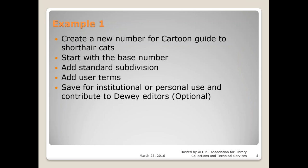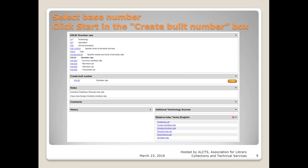Here's the number building assistant example. I have Russian blue cats, so we want to create a cartoon guide to short hair cats. We start with the base number, add a standard subdivision, add user terms, and save it. The base number is short hair cats — you click the Start button after finding the number by search, browse, or any regular way you'd search by Dewey. The notes here include Chartreuse and Russian blue cats.